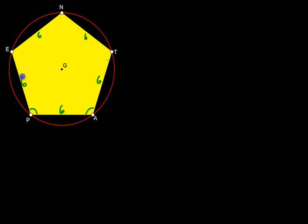Angle P is congruent to angle A, T, N, and E. Now our task is to find the area of the entire yellow shape. In order to do that, we'll split up the shape into 5 congruent triangles.